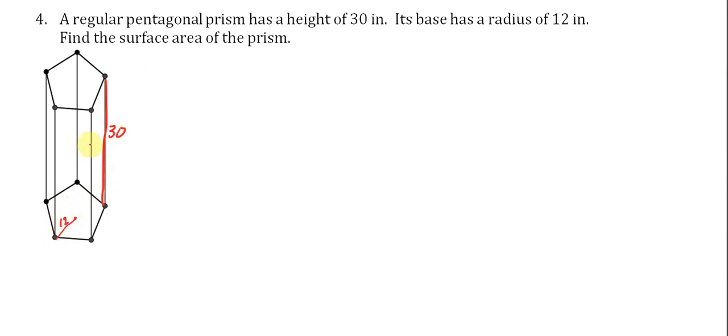And for us to understand this a little bit better, let's break this up into the different faces. So there are two of these pentagons, and their radius is 12. And then going around the shape, there are five of these rectangles.